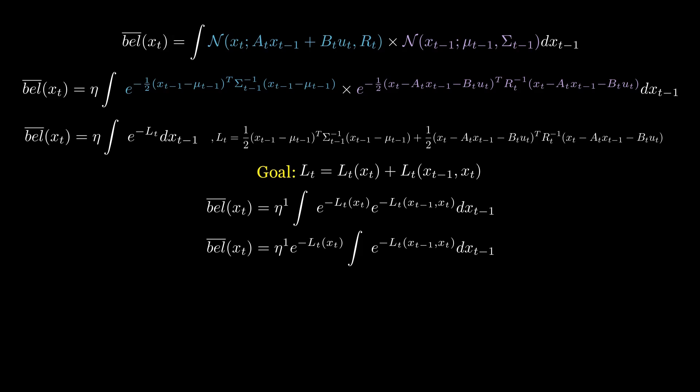If we can find such a form, we can see that in the integral the first term is not affected by Xt minus 1, so it can be moved outside. Then, if we make Lt of Xt minus 1 and Xt a normal distribution since it's quadratic, then we can simply absorb the integral into eta because it is a constant when you integrate Xt minus 1. Notice that the etas are indeed not the same, but since it's for normalization, we don't care too much and leave it as the same symbol.